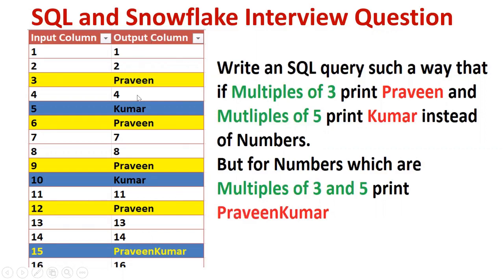So the condition is: write an SQL query such that if multiples of three — in the sense like three, six, nine, 12, 15 — these are multiples of three, I want to display as Ravind.